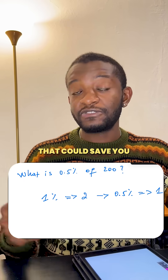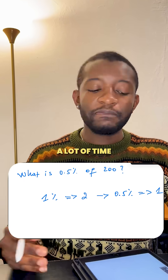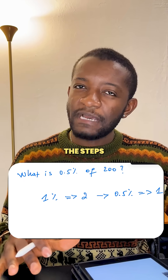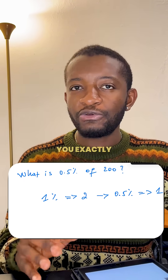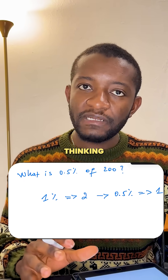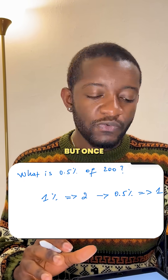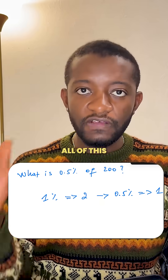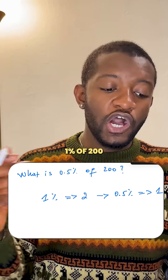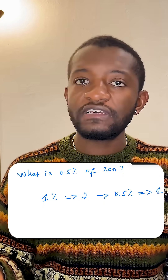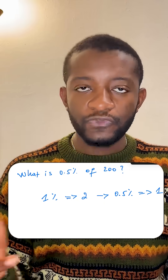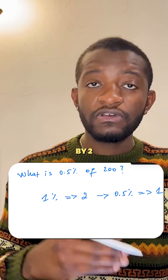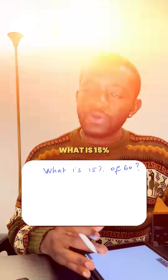That could save you a lot of time. I'm showing the steps so you can see exactly how I'm thinking about it, but once you get the hang of it, you can do all of this in your head. 1% of 200 is 2, divide by 2, it's 1.